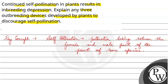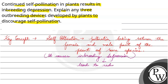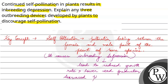Since there is no variation taking place, it causes inbreeding depression. Inbreeding depression basically leads to reduced growth rate, lower seed production, and decreased plant vigor. Self-pollination is okay one or two times, but if it continues to happen, then inbreeding depression occurs.